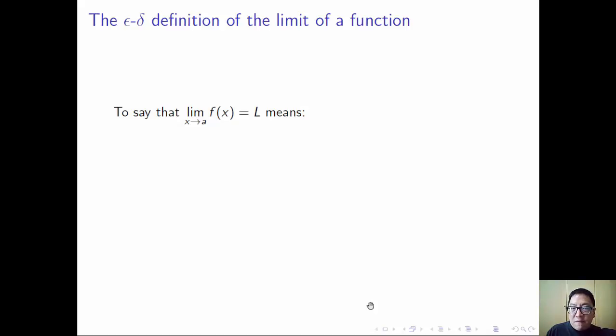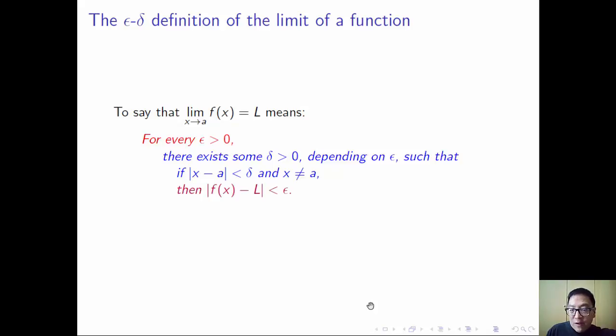So here goes. So to say that the limit of f(x) as x approaches a equals l means, that for every epsilon greater than 0, there exists some delta greater than 0, depending on epsilon, such that if the absolute value of x minus a is less than delta, and x is not equal to a, then the absolute value of f(x) minus l is less than epsilon.